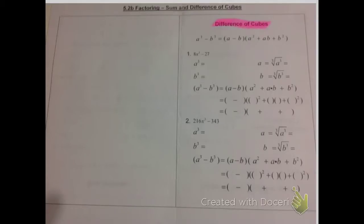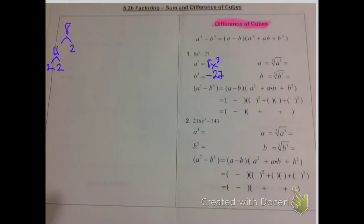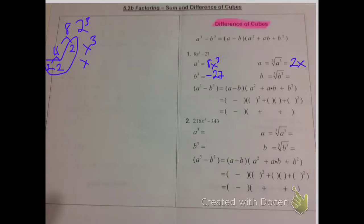First we have our equation 8x cubed minus 27. 8x cubed is a cubed and negative 27 is b cubed. We're going to factor tree the 8: that gives us 2, 2, and 2. We are looking for any group of 3, and in this case we have 2, 2, and 2. So 8 is also equal to 2 cubed. Then you do the same thing for x cubed, which means it's just x. So then 2x equals a.